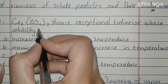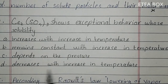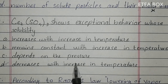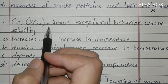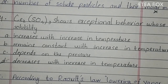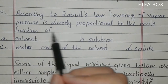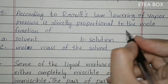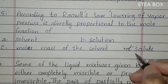MCQ 14: cerium sulphate shows exceptional behaviour — its solubility decreases with increase in temperature. Because the enthalpy of cerium sulphate is negative (exothermic), and in exothermic cases increasing temperature decreases solubility. Option D is correct. MCQ 15: according to Raoult's law, lowering of vapour pressure is directly proportional to the mole fraction of solute. This is the statement of Raoult's law.